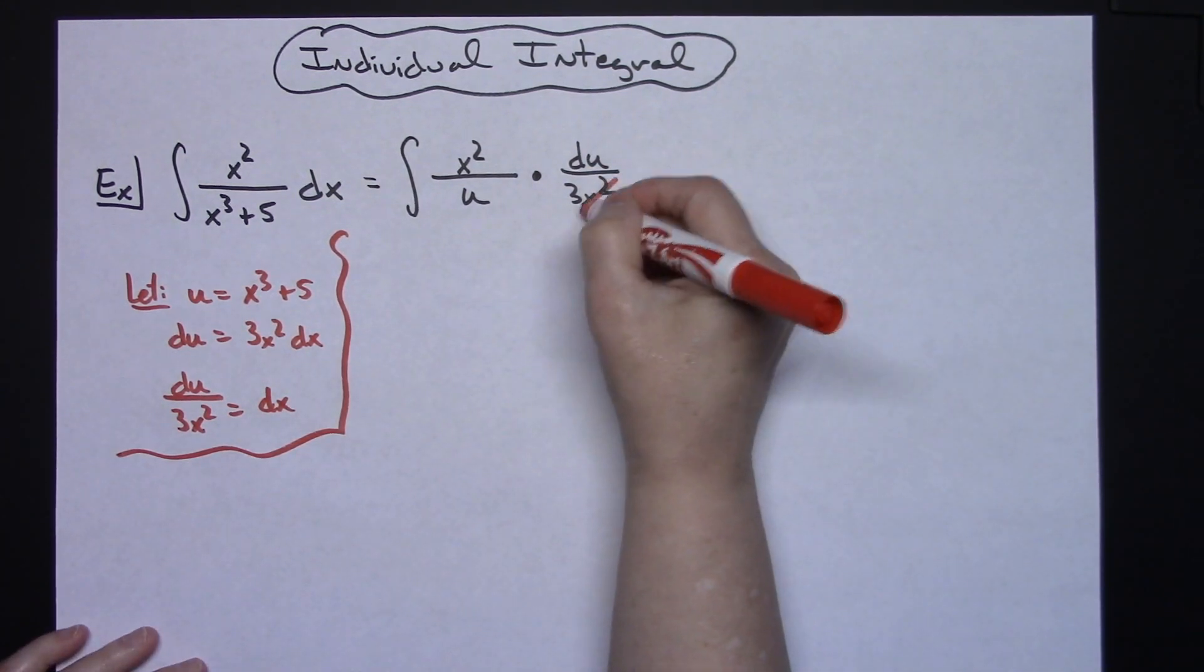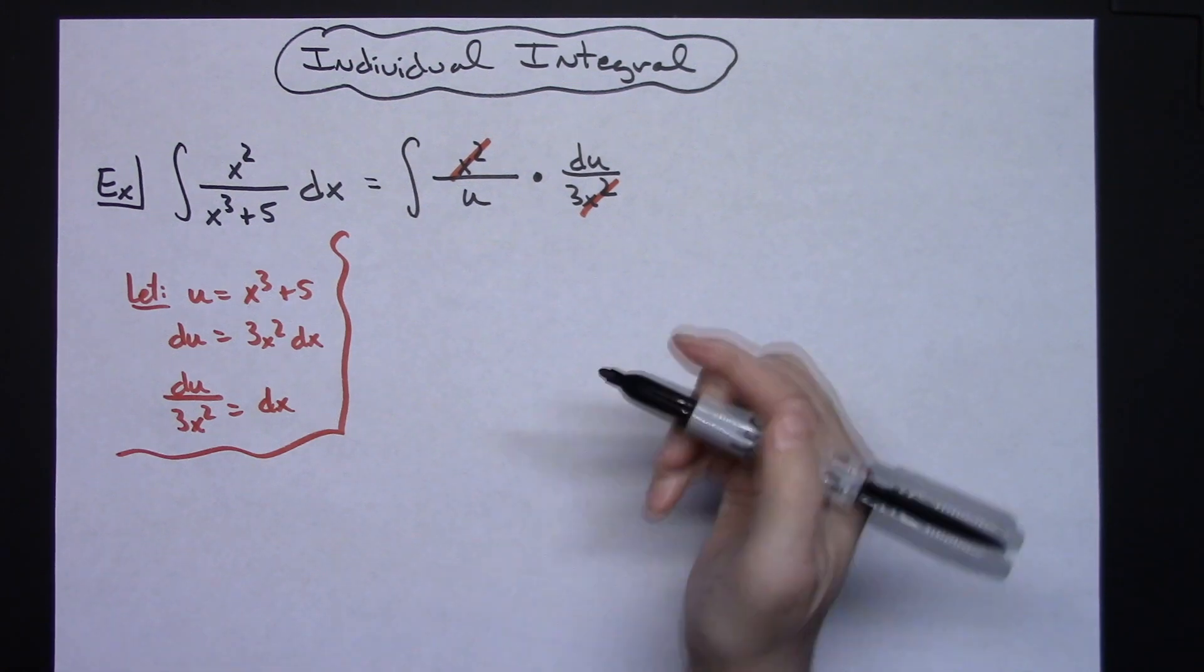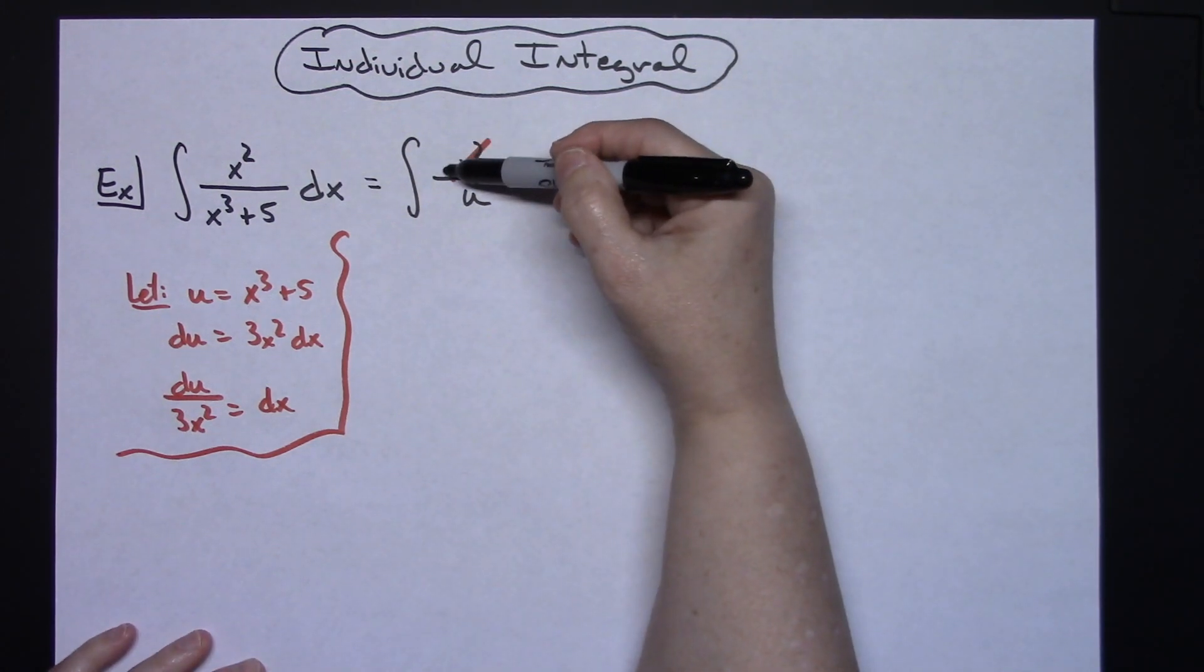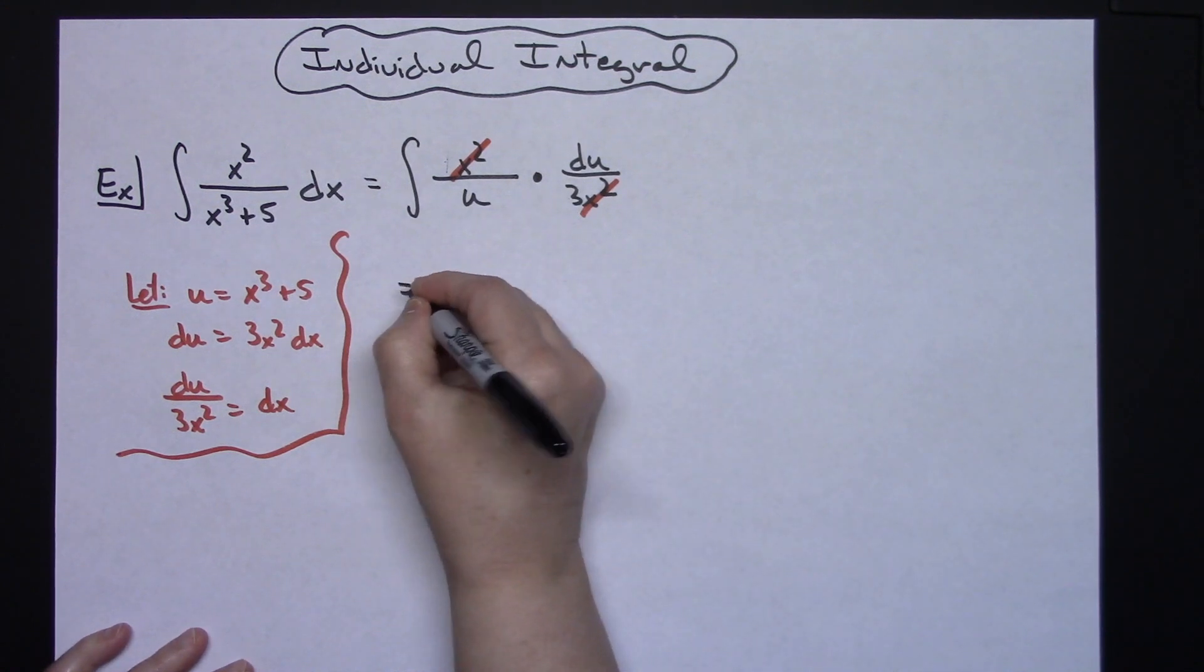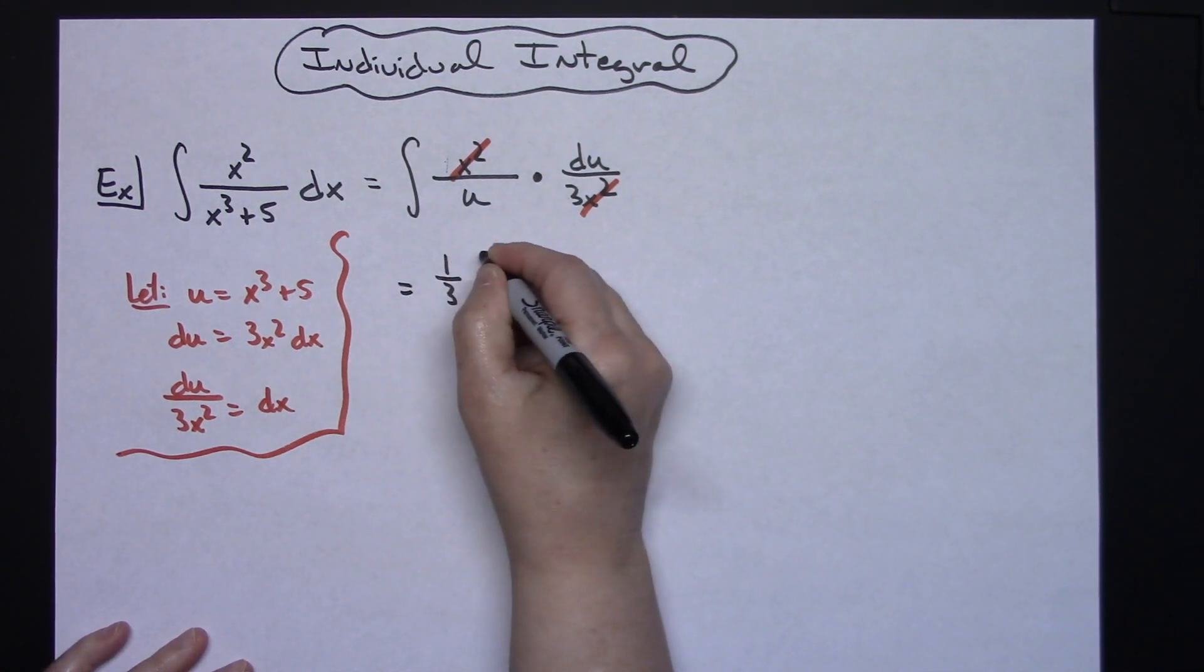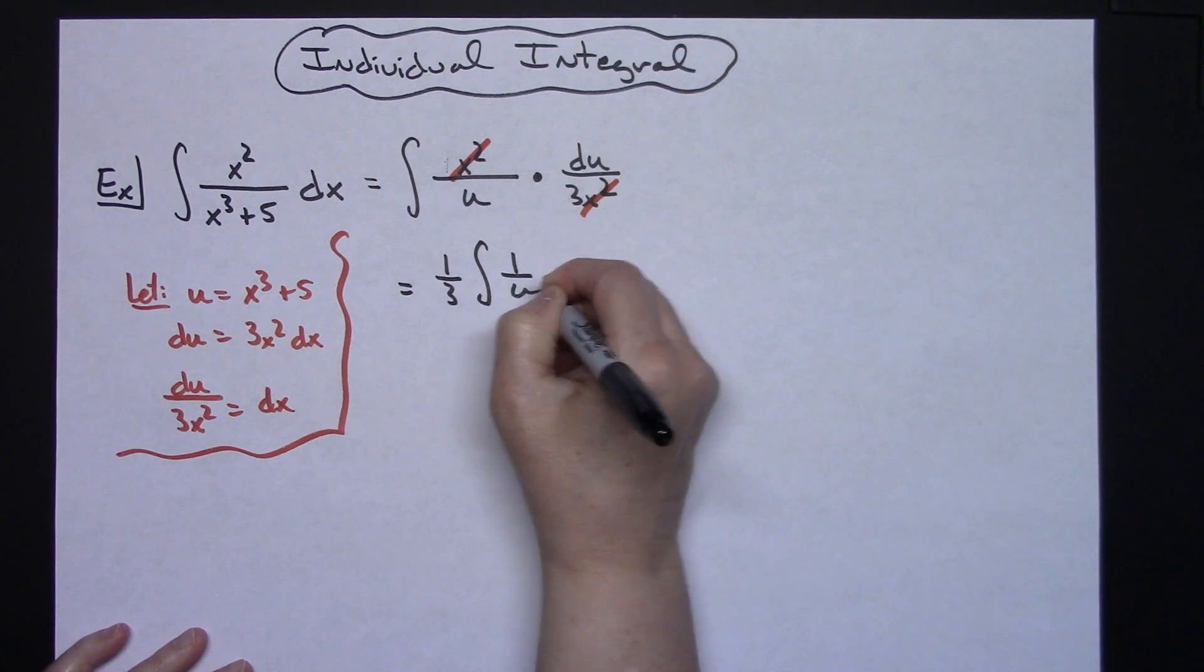So from there we can see that those x squareds are going to cross out and we can see that there's an imaginary one right here. So I've got a one-third in this integral that I can pull out in front. So I'm going to have one-third the integral 1 over u du.